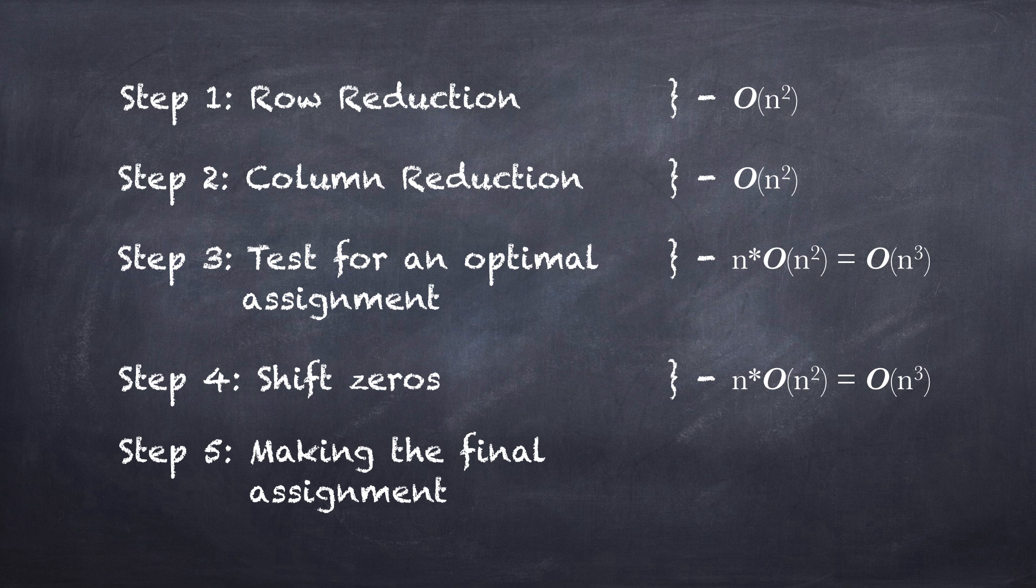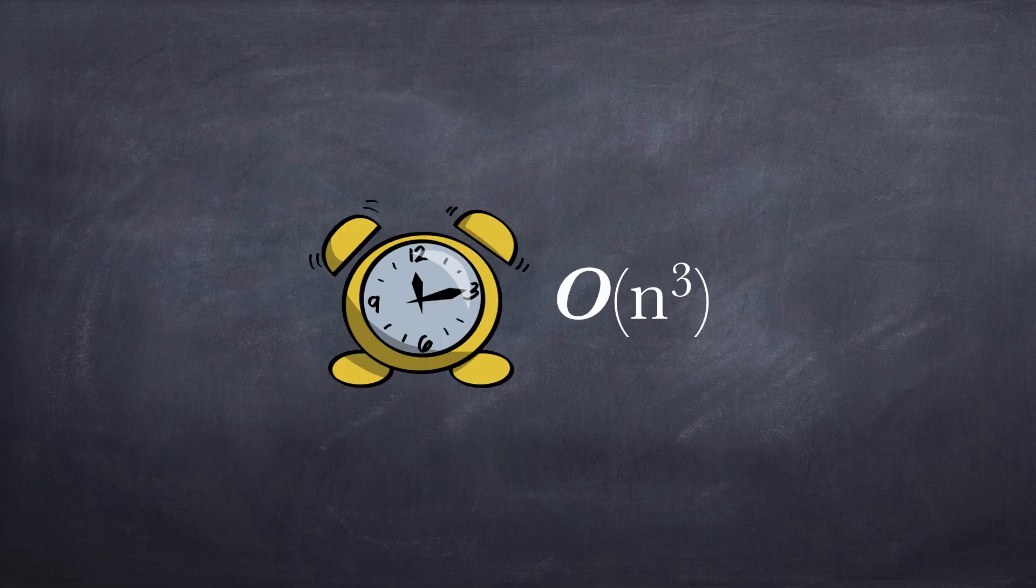Step 5 sums n values of the original matrix, thus is O of n. The overall complexity is therefore O of n-cubed.